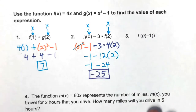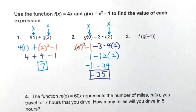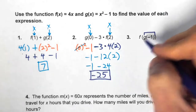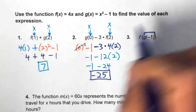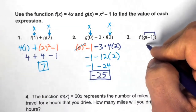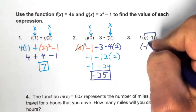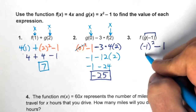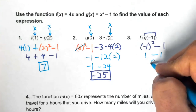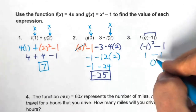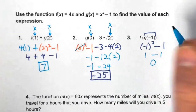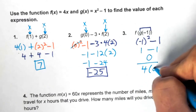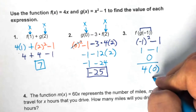Number three: when you have a function within a function, handle the inside function first. So evaluate g(-1) first: substitute -1 for x, giving (-1)² - 1 = 1 - 1 = 0. Then substitute that result into f(x), so f(0) = 4 times 0 = 0.